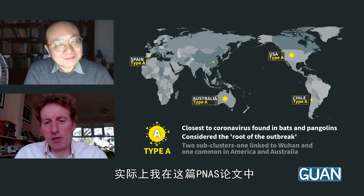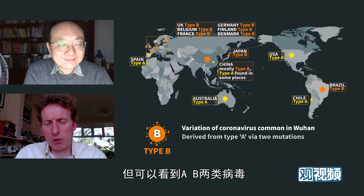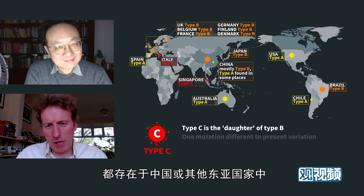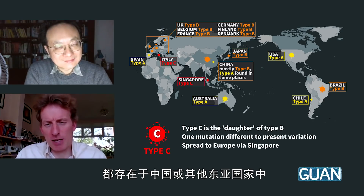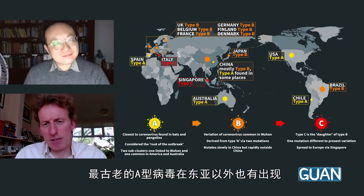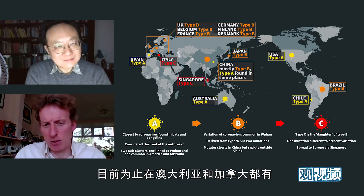Dr. Forster notes that the geographical origin is something he hasn't directly attempted to address in the PNAS paper. What you do see is that representatives of both the A and B nodes have Chinese and other East Asian countries prominently represented. Interestingly, even the oldest A node already has representatives outside East Asia — in Australia and Canada — suggesting the spread could be older than assumed.